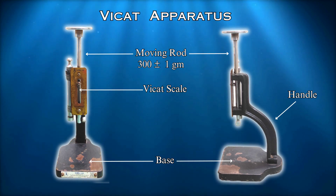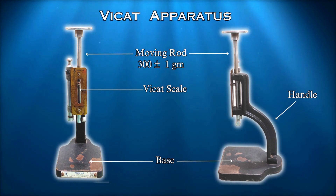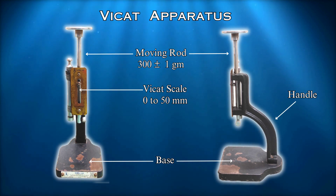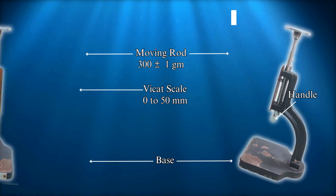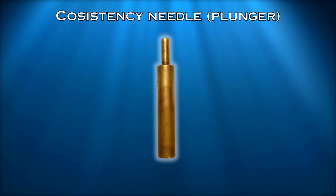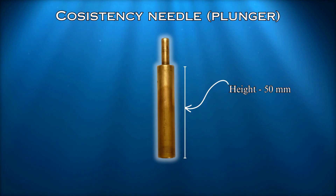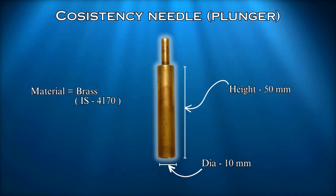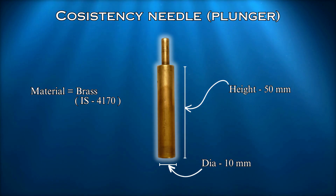After attaching the needle, there should be a vertical clearance of approximately 50mm, and the scale must have markings of at least 0–50mm. The consistency plunger should have a length of 50mm and a diameter of 10mm, and must be made from brass in accordance with Indian Standard IS 4170.